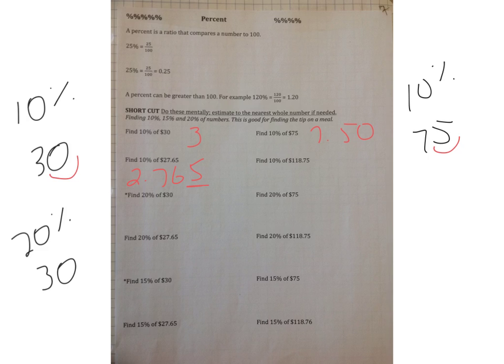Now 20% of 30, which is right here, we could find 10% of 30, which is 3, and another 10% of 30, which is 3, which would give you 6.